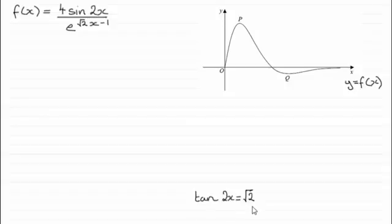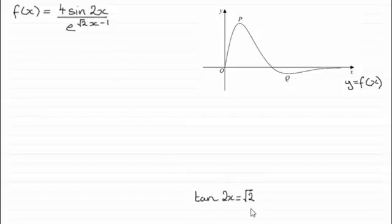I'm going to take you slowly through this solution, though some of you might want to fast forward to the end to see all the working. In order to find the maximum and minimum points, we need to realize that the gradient at points P and Q is zero. So we need to differentiate this equation with respect to x and make it equal to zero. Then solving that equation should take us down to tan 2x equals root 2. Since we have two functions of x divided by one another, we have to use the quotient rule.